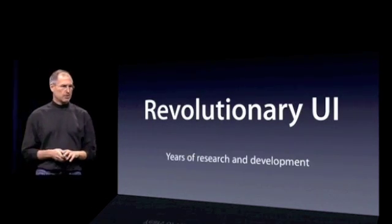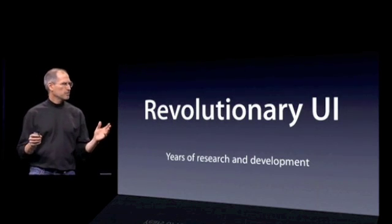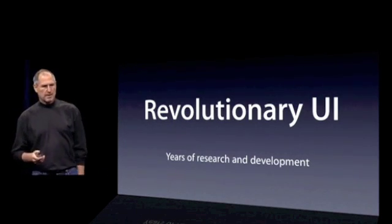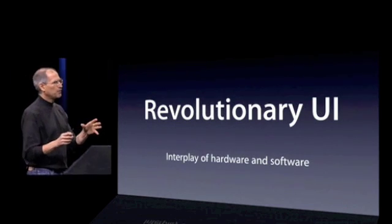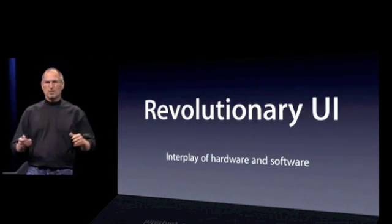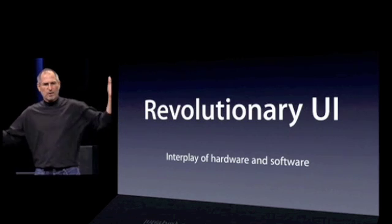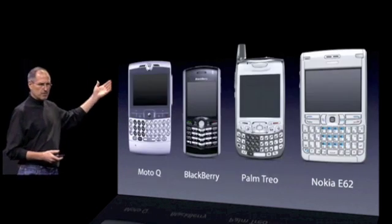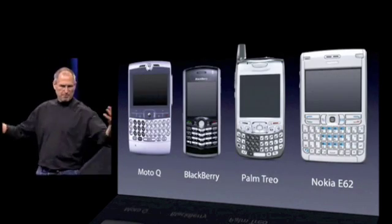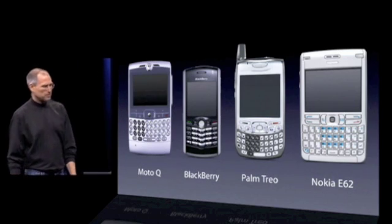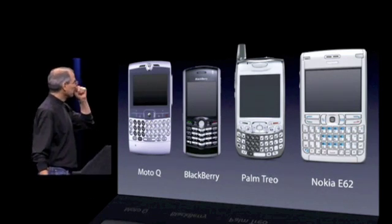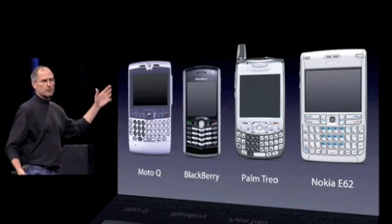It's the result of years of research and development, and it's an interplay of hardware and software. Why do we need a revolutionary user interface? Here's four smartphones — the Motorola Q, the BlackBerry, the Palm Treo, the Nokia E62 — the usual suspects. What's wrong with their user interfaces?